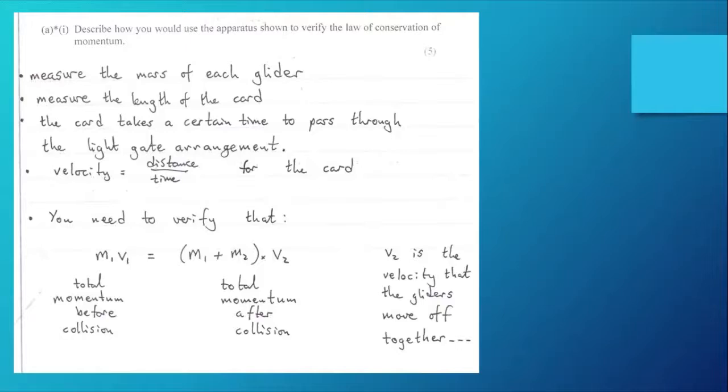We need to verify that the total momentum before equals the total momentum after: m1v1 equals (m1 plus m2) times v2. We're explaining things clearly and really we need to show that the left-hand side of the equation is equal to the right-hand side within the limits of experimental uncertainty to verify the law of conservation of momentum. I hesitate to use the word verify because according to Karl Popper, the famous philosopher of science, we cannot verify scientific laws, we can only falsify them, but I'm moving away from the physics.